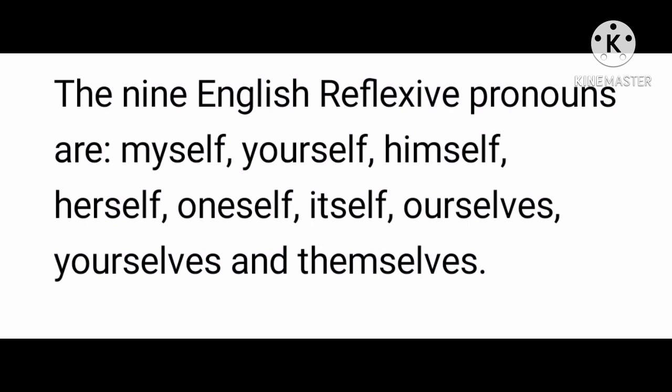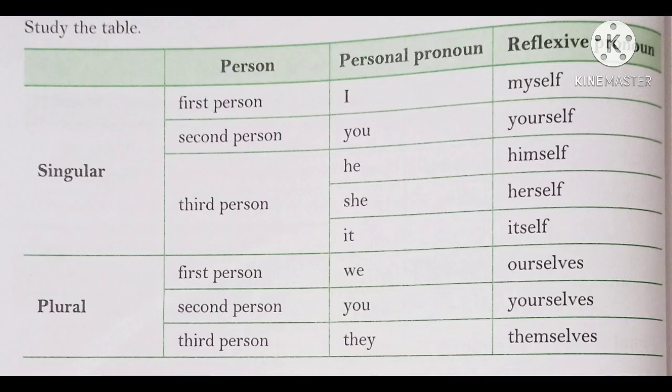Each of them can only be used with a specific personal pronoun. Look at this chart. 'Myself' is used with I; 'yourself' with the singular form of you; 'yourselves' with the plural form of you; 'himself' with he; 'herself' with she; 'itself' with it; 'ourselves' with we; and 'themselves' with them. Each reflexive pronoun is only used with a specific personal pronoun and with nothing else. I hope you have now understood how to use reflexive pronouns.